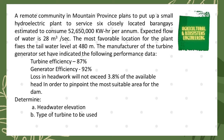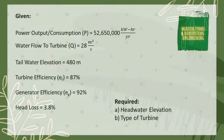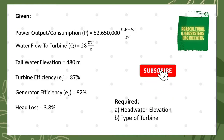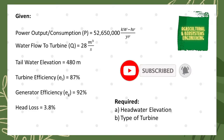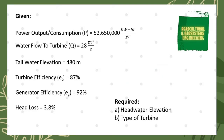In this problem, we are going to determine the headwater elevation and the type of turbine to be used. First, let's list our given values: consumption is 52 million 650,000 kilowatt-hours per year, water flow Q is 28 cubic meters per second, tailwater elevation is 480 meters, turbine efficiency Ep is 87%, generator efficiency Eg is 92%, and head loss is 3.8%.